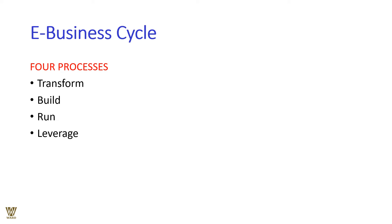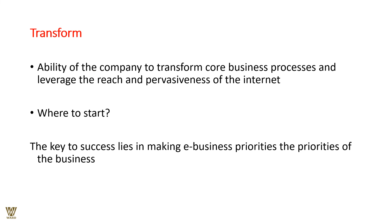The e-business cycle involves four processes: transform, build, run, and leverage. First, transform your business from a traditional brick-and-mortar store to a virtual medium. Then build up the brand. Then run and operate it smoothly to cut costs. Finally, leverage your brand name, goodwill, and extend into new markets, new businesses, new brands, and new products.